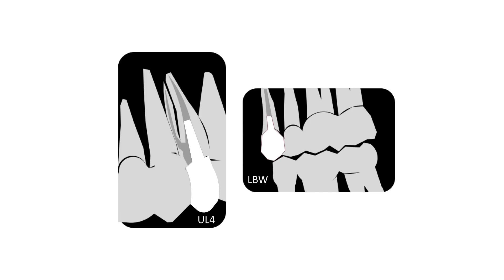As you can see in the periapical image, SLOB stands for Same Lingual Opposite Buccal. When the root moves in the same direction as the horizontal shift of the tube, it is said to be lingual or palatal. If the root moves in the opposite direction to the shift of the tube, then the root is said to be buccal.